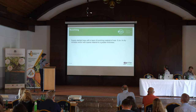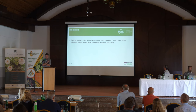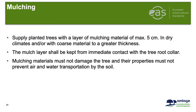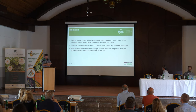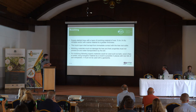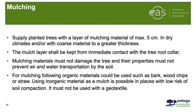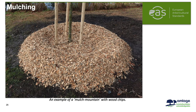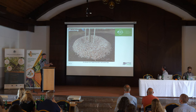Mulching: supply planting trees with a layer of mulching material — maximum five centimeters; in dry climates it can be a little thicker. The mulch layer must be kept from direct contact with the tree or root collar. Mulching materials must not damage the tree and must not prevent air and water movement through the soil. Organic materials should be used, such as bark, wood chips, or straw. Inorganic materials are possible in areas with low risk of soil compaction but must be used with geotextile.